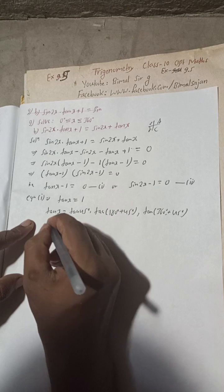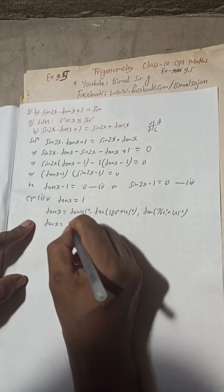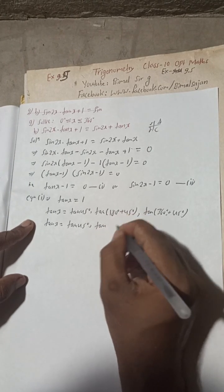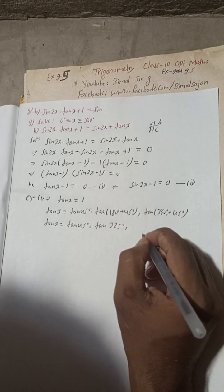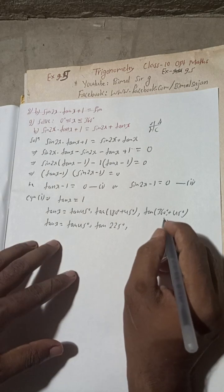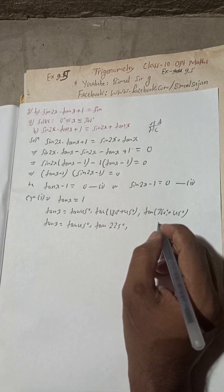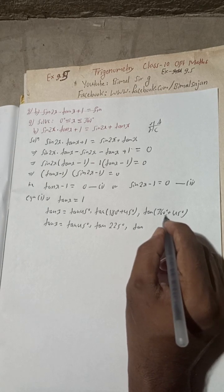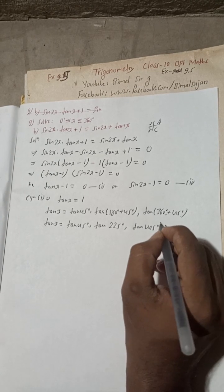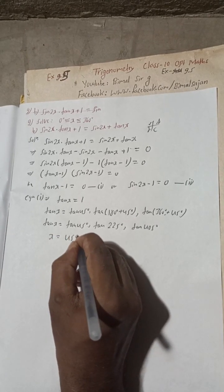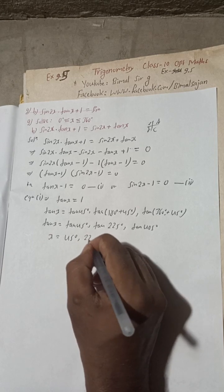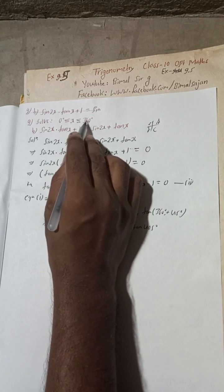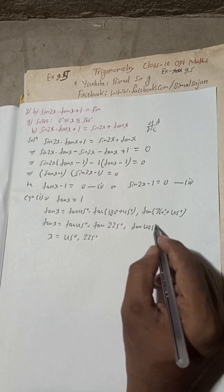So from Equation 1, tanx = tan 45° and tan 225°, giving x = 45° and x = 225°. The value 405° is not taken because it exceeds the range — we need x less than or equal to 360°.